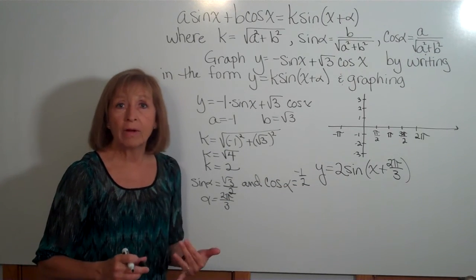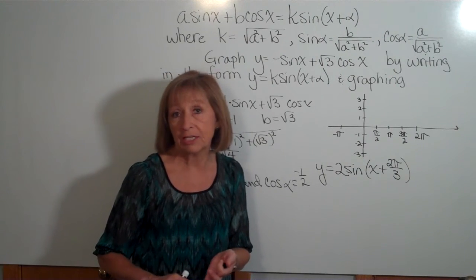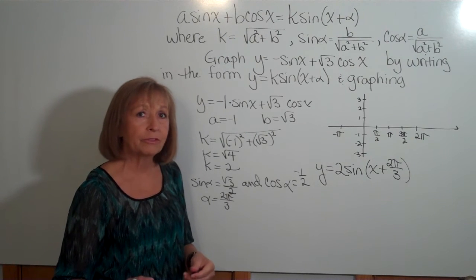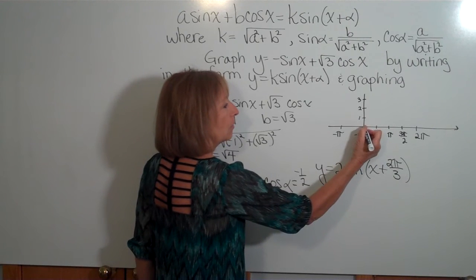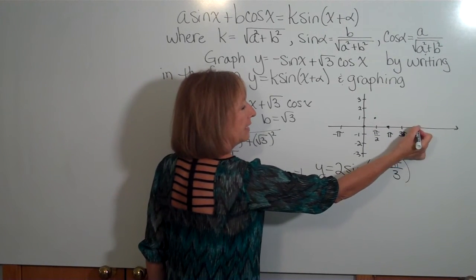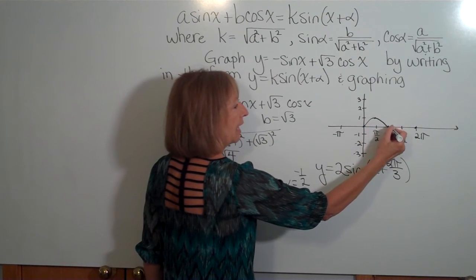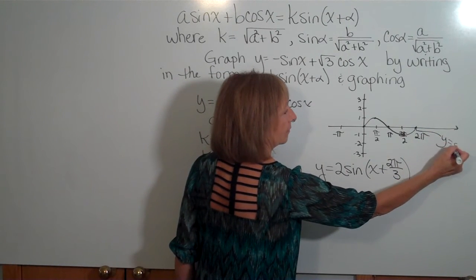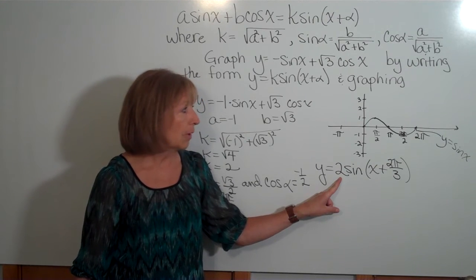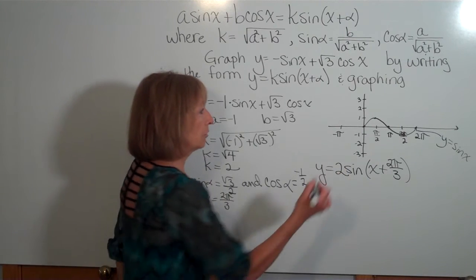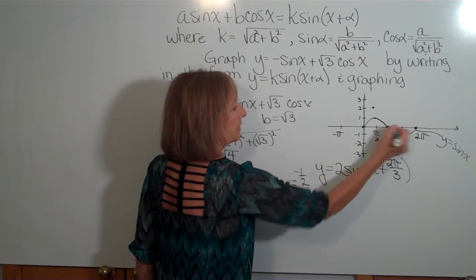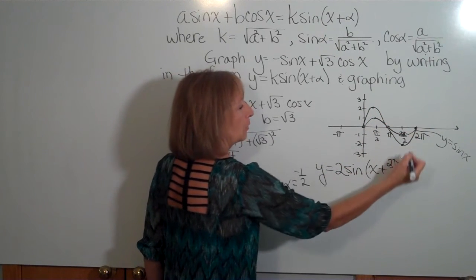That makes it much easier to graph because we can think back to graphing trig functions with amplitude changes and phase shifts. Our basic function is sine x. Sine of zero is zero, sine of pi over two is one, sine of pi is zero, sine of three pi over two is negative one, and sine of two pi is zero. This function also has an amplitude of the absolute value of two, which is two. So we multiply every y output by two: two times zero is zero, two times one is two, two times zero is zero, two times negative one is negative two, and two times zero is zero. So here is our y equals two sine x.